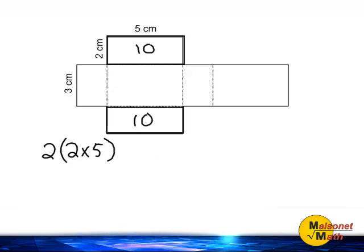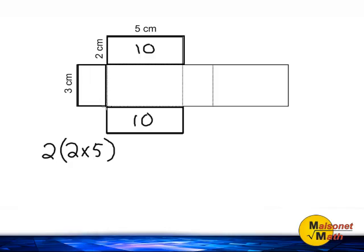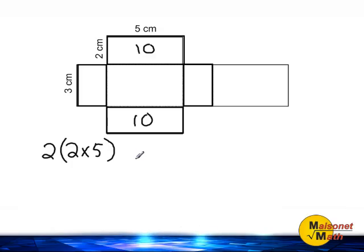Now let's move on to two other rectangles that are congruent to each other. We can see that this rectangle right here and this rectangle right here are congruent to each other. So we are going to have to add the area of those two rectangles to what we already have.